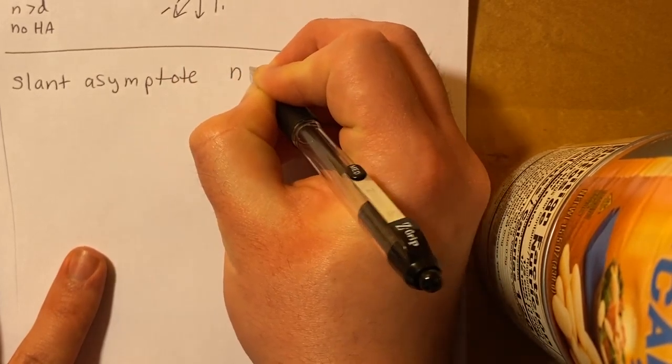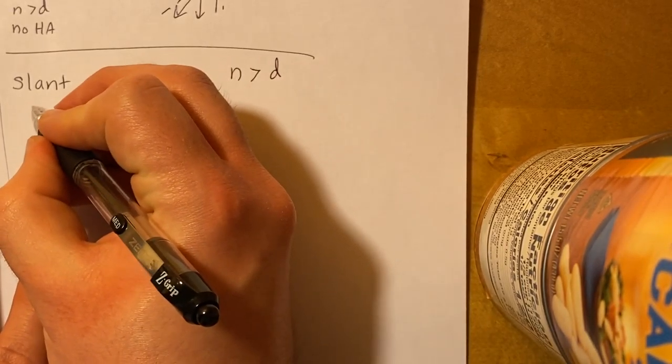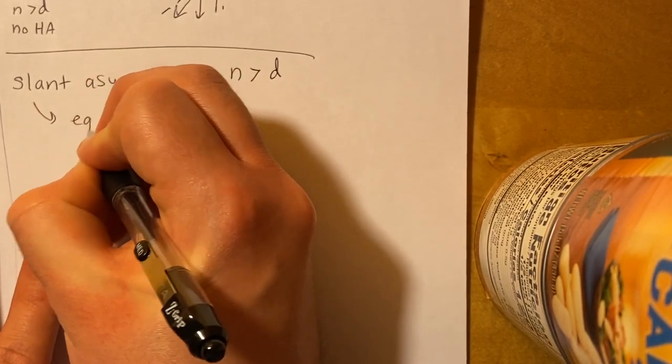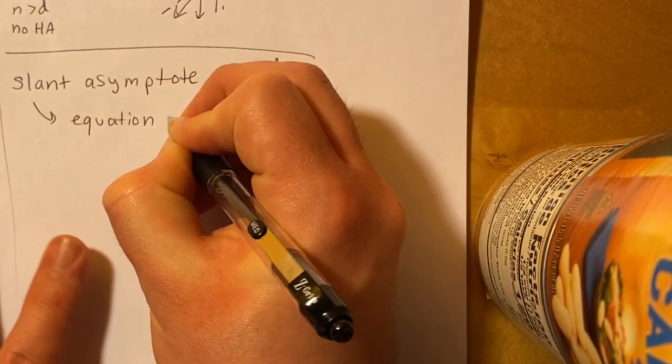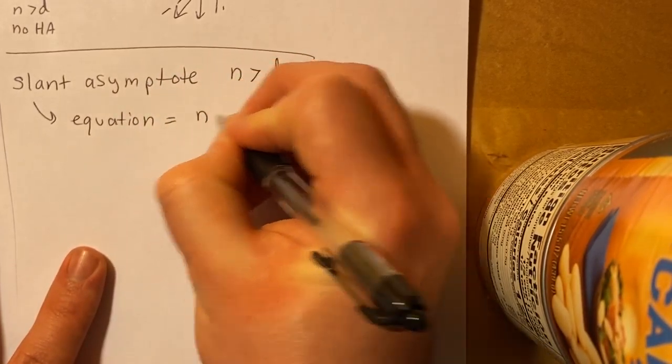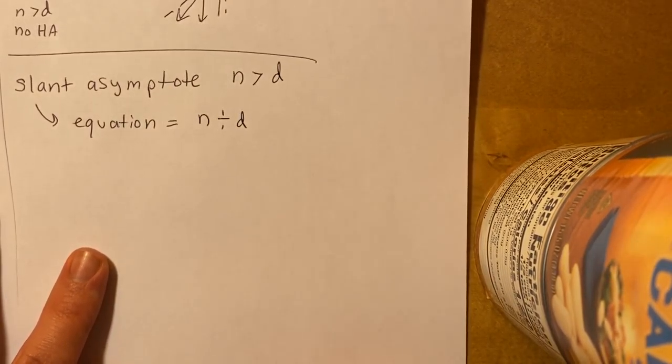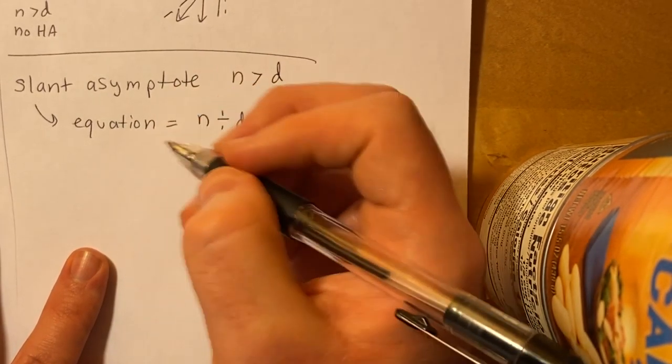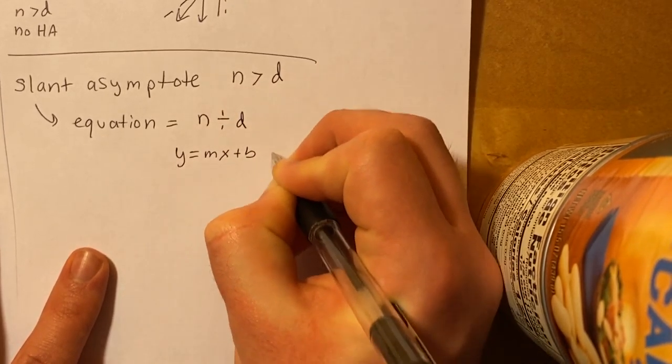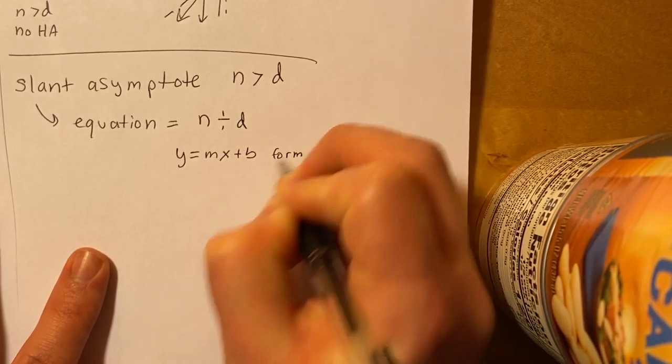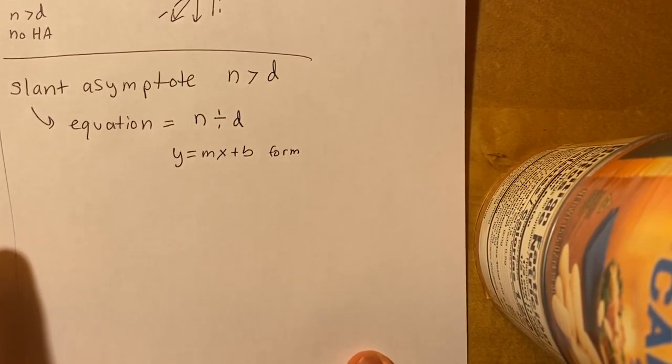So the numerator is higher than the denominator. And the equation of this asymptote is equal to the numerator divided by the denominator. And it's going to turn out to be a linear line in kind of like a y equals mx plus b form. It's very cool. And you're going to use polynomial box division to do this.